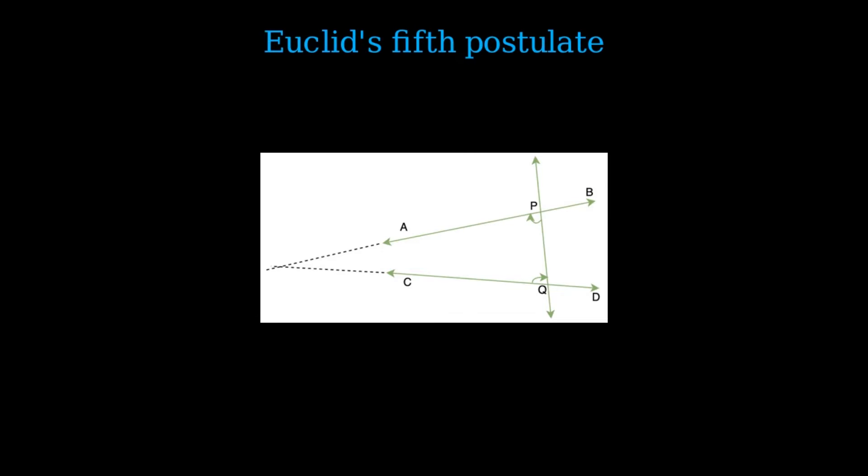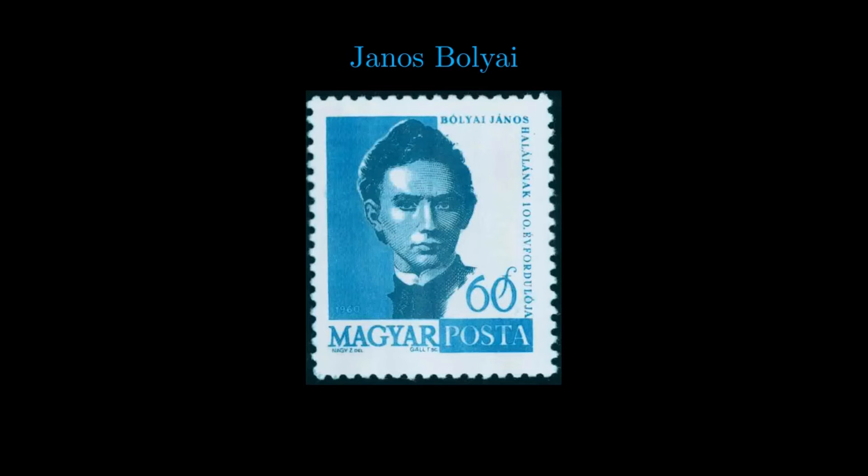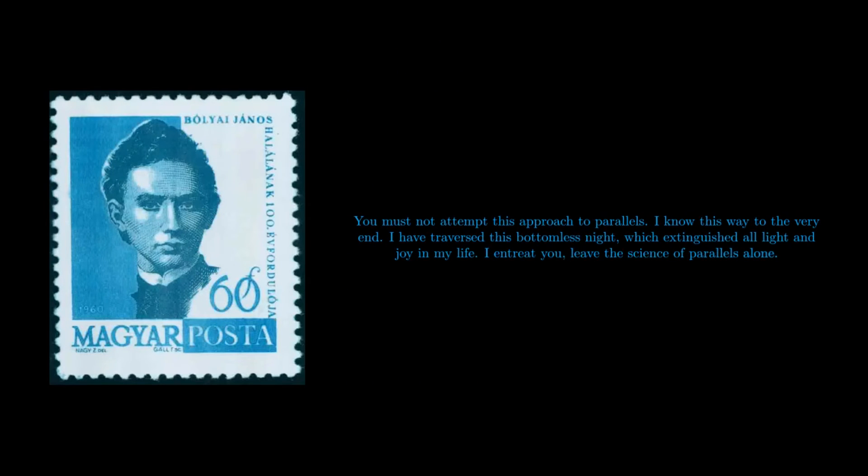Ever since the time of Euclid, mathematicians felt like it was an unnatural postulate and wanted to show that it could be proven starting from the others. However, all these attempts were not successful. This fifth axiom tormented one mathematician more than the others, János Bolyai. Bolyai's obsession with the latter is shown by the following letter that his father wrote to him: 'You must not attempt this approach to parallels. I know this way to the very end. I have traversed this bottomless night, which extinguished all light and joy in my life. I entreat you. Leave the signs of parallels alone.'